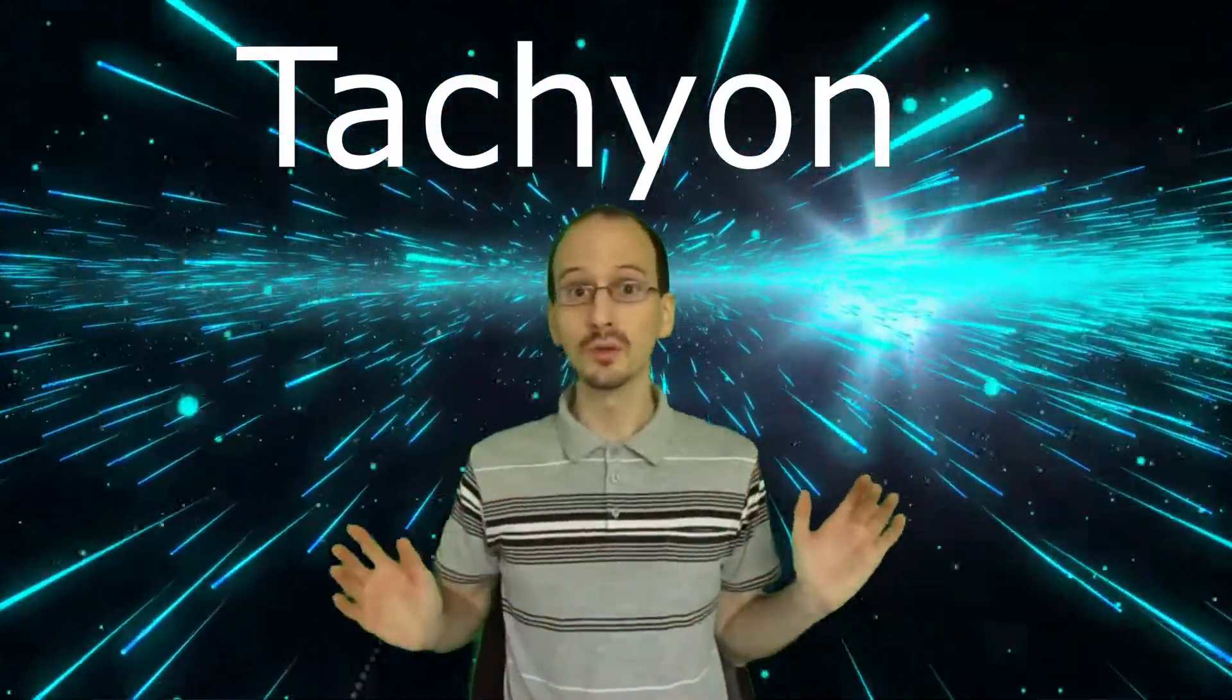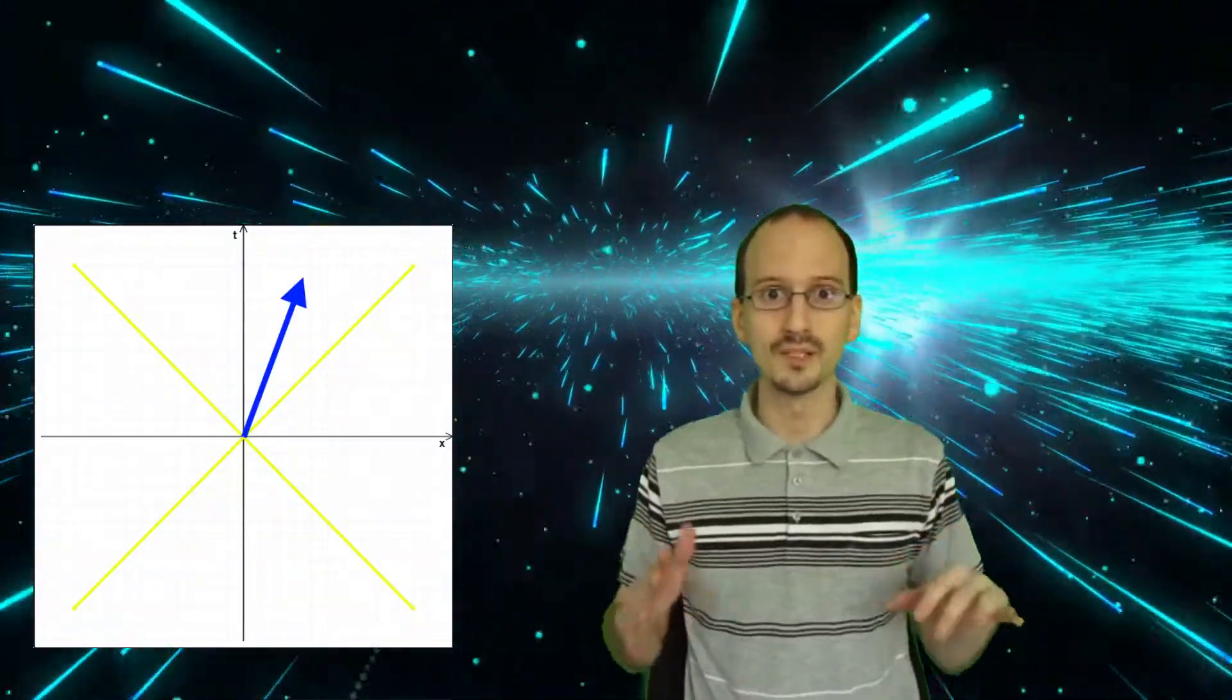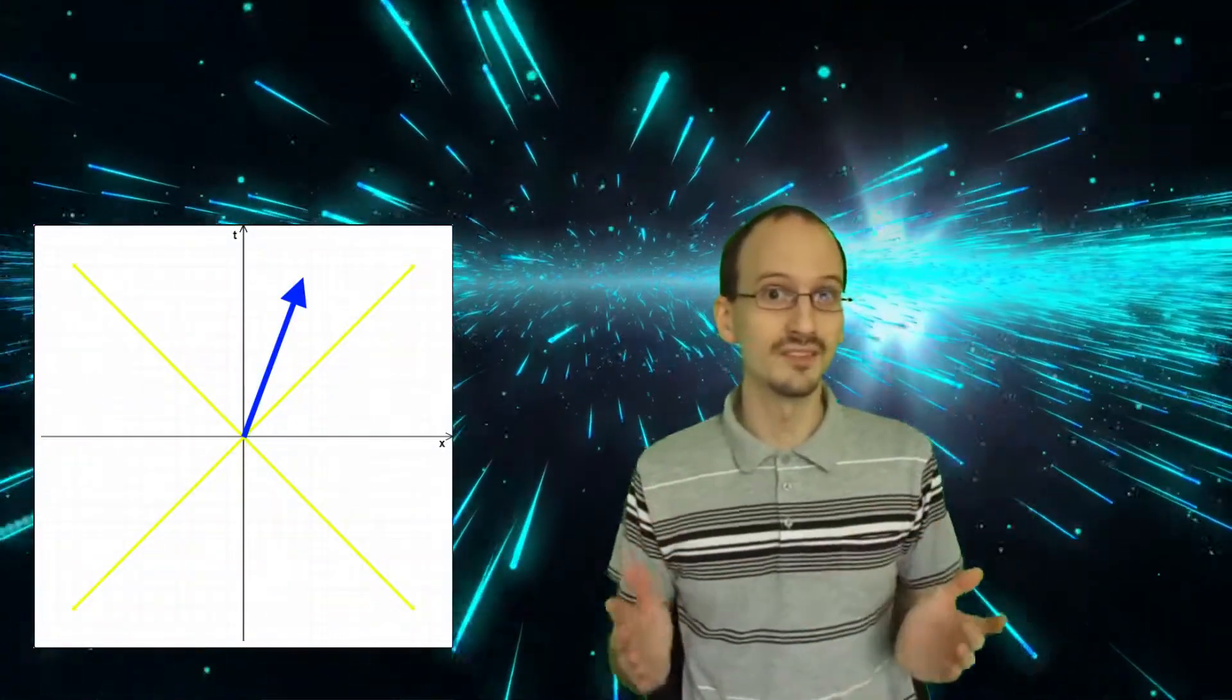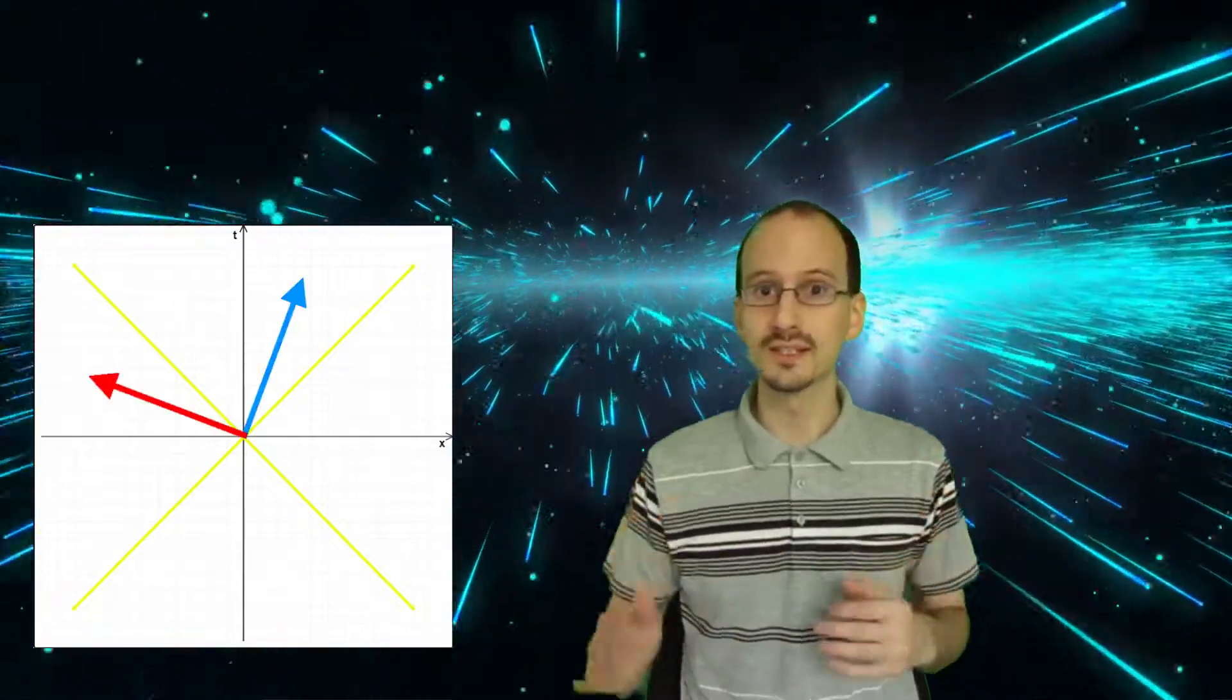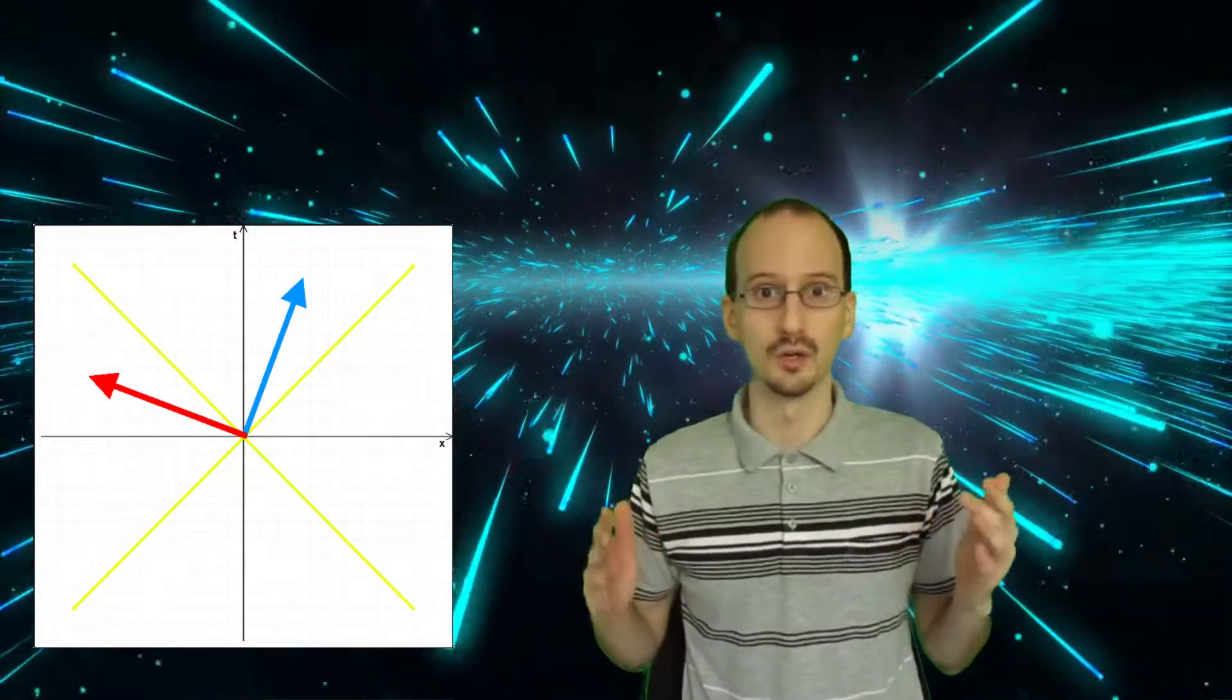A tachyon is a type of hypothetical matter that can only go faster than light. This is opposed to normal matter, which can only go slower than light. If tachyons exist, we might be able to jump to a faster-than-light state by transforming our matter into tachyonic matter. This would cause our velocity vector to transform into a corresponding faster-than-light vector, which is what To Sleep means when it talks about going in a straight line along a right angle.